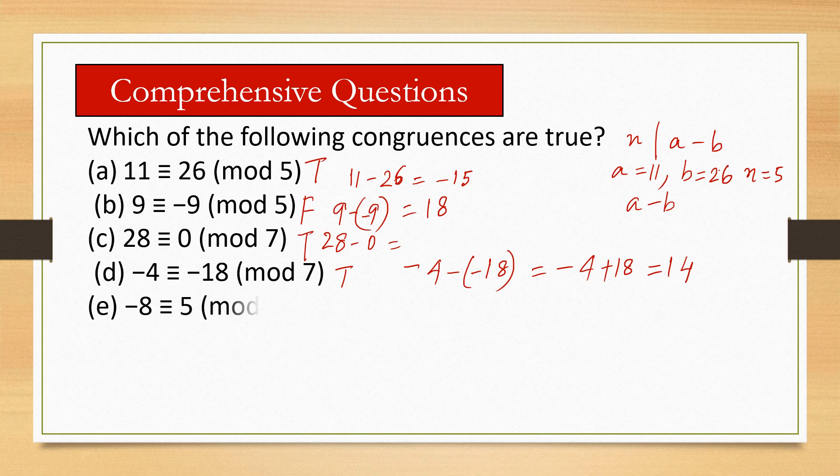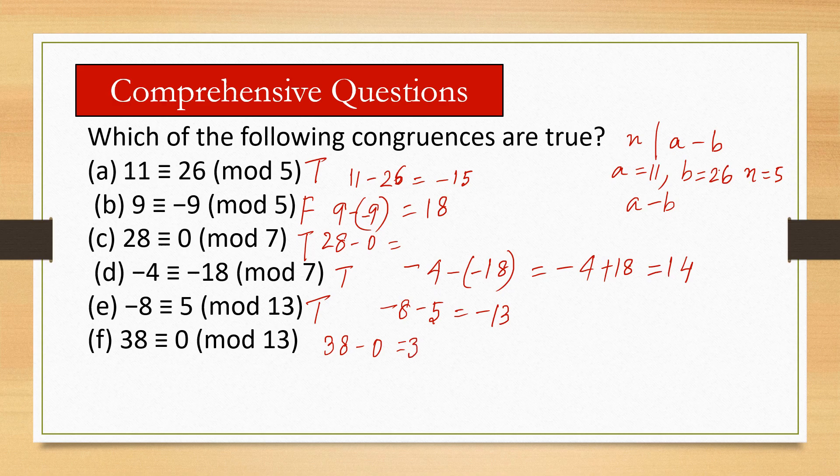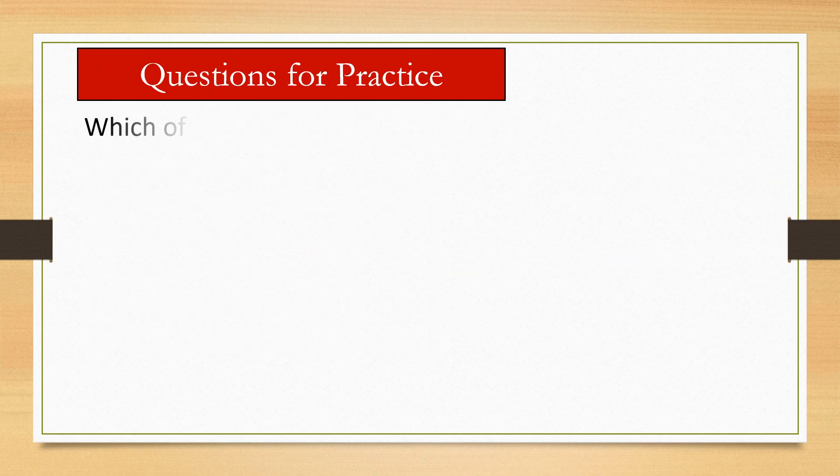Next: -8 ≡ 5 (mod 13). So minus 8 minus 5 is minus 13. Yes, this is true. Next: 38 ≡ 0 (mod 13). So 38 minus 0 is 38. 38 is not divisible by 13, so this is false. I hope you have understood. Now you can solve some more questions yourself.